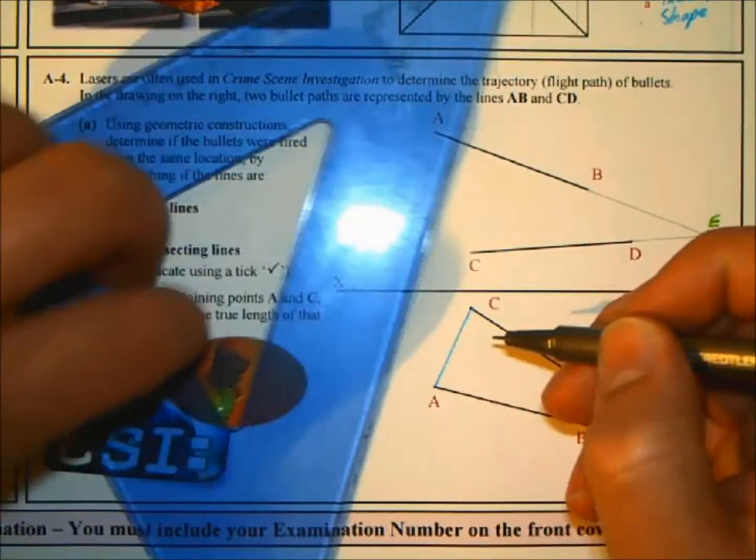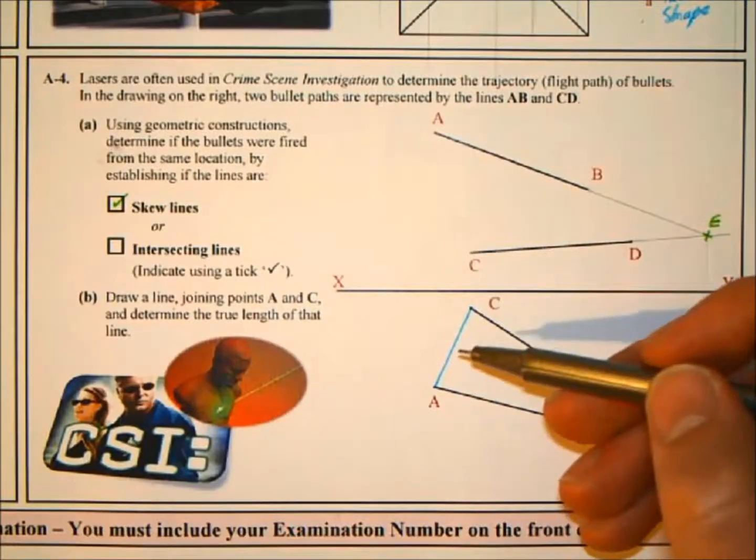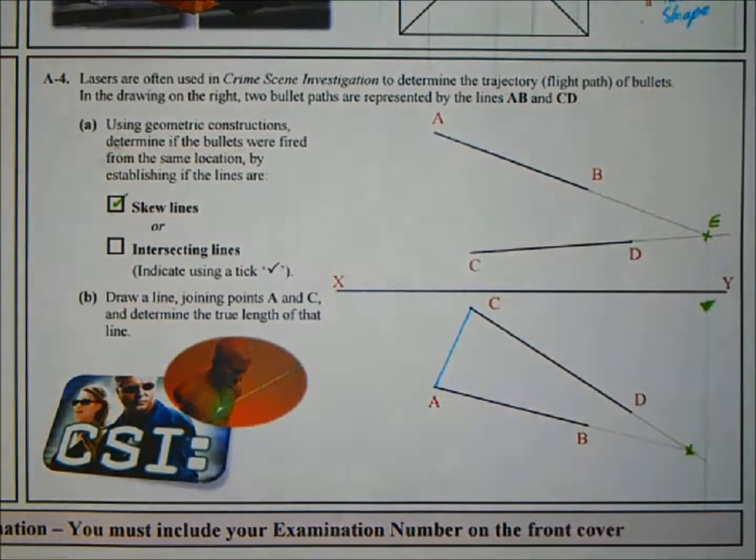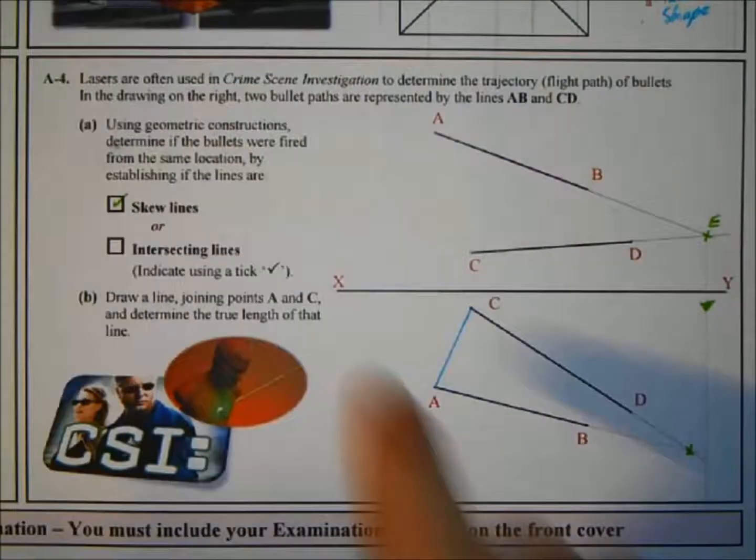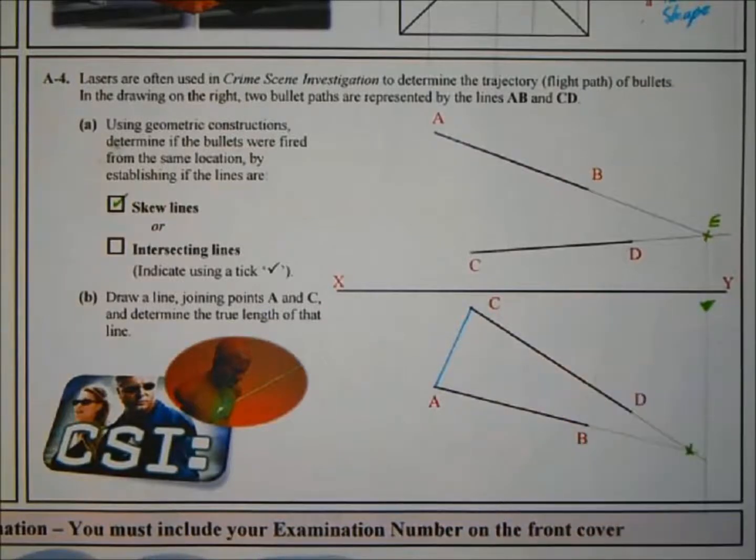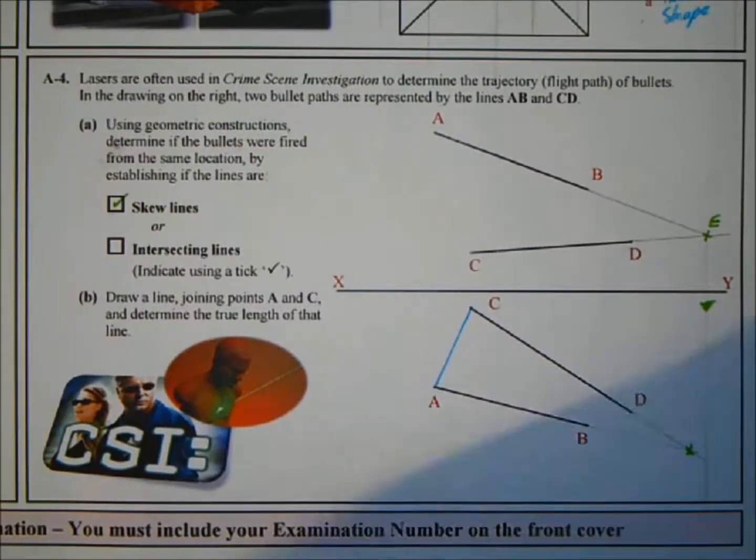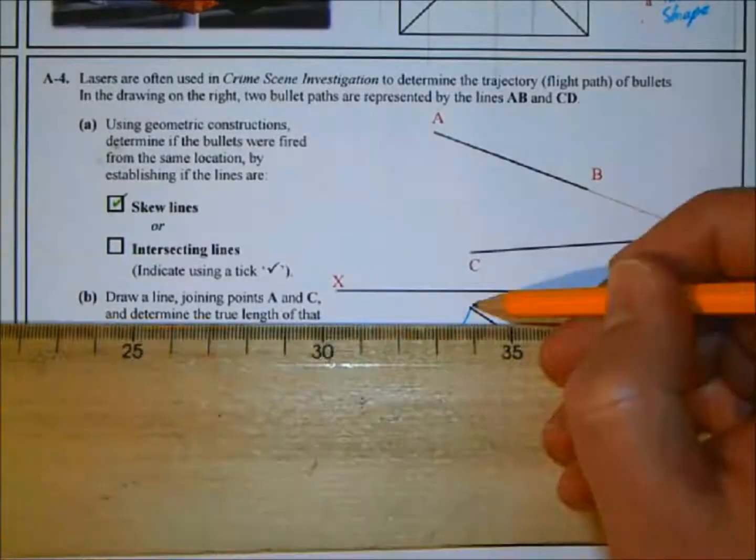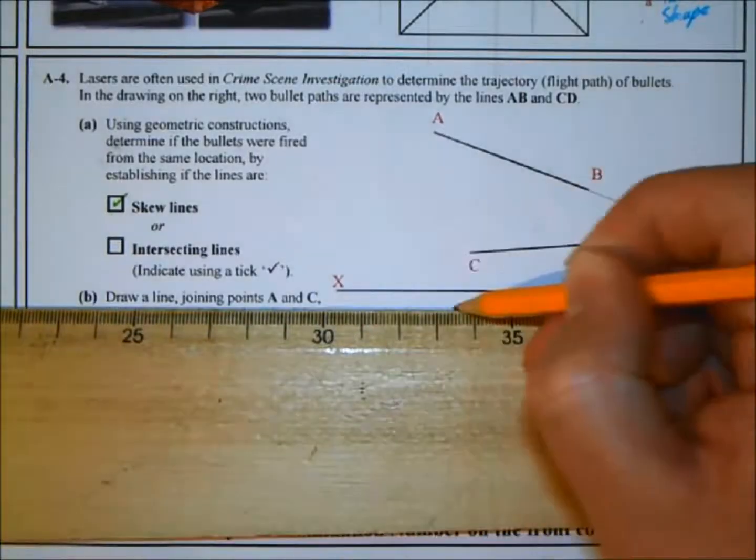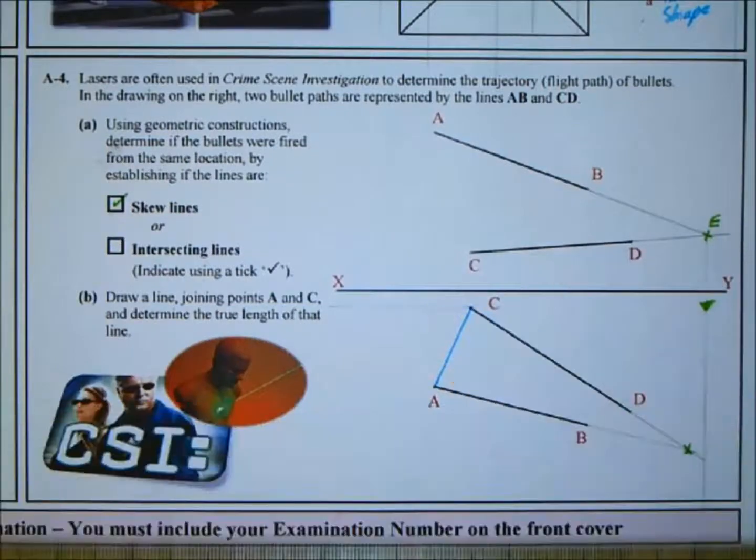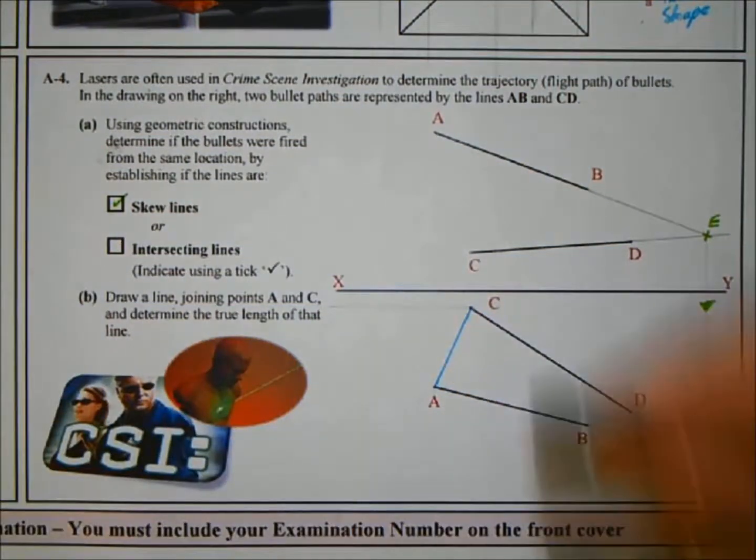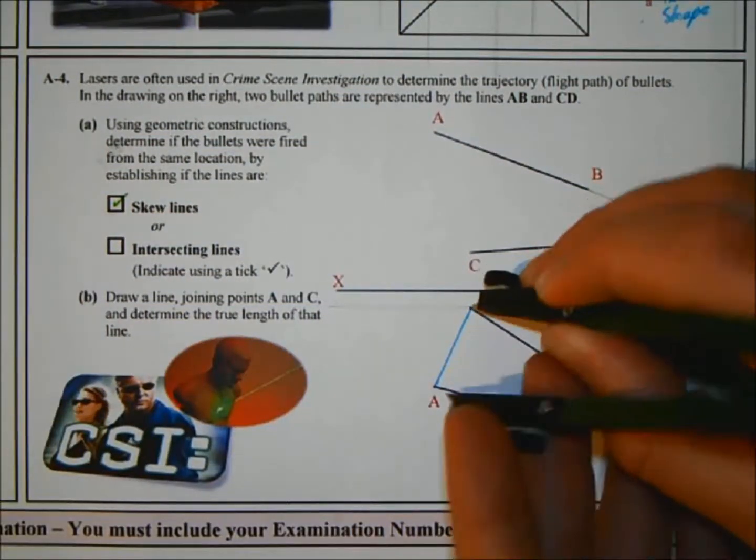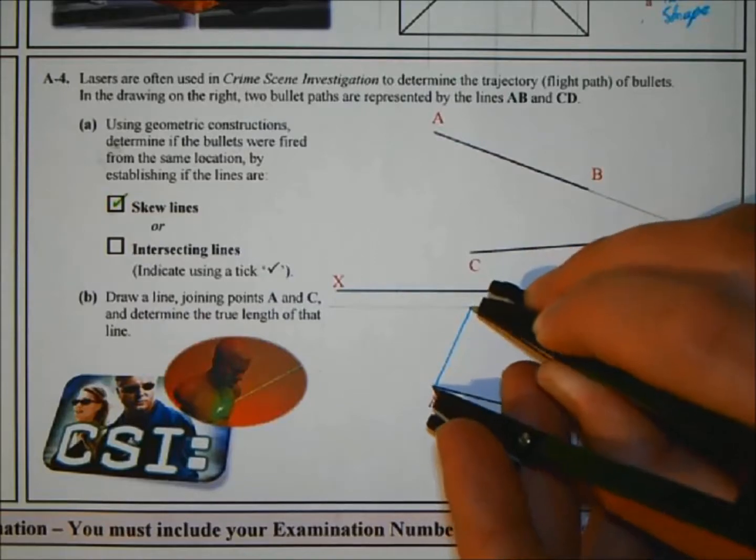We need the true length of that line. To get a true length of a line in your elevation or plan, if they're parallel to the XY line in one of the views, it'll be true length in the next view or the opposite view. So what I'm going to do is I'm going to draw a line up from C parallel to the XY line. I'm going to rotate point A around.